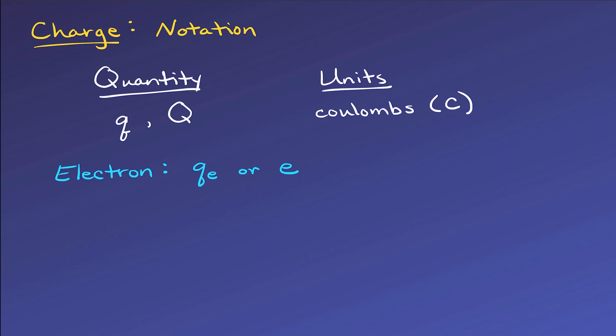Personally, I prefer to write Q sub e for the charge of an electron, and I'll use this going forward just to not get confused with the constant e that you see in math sometimes, though they are not often seen together. The charge of an electron is minus 1.602 times 10 to the minus 19 Coulombs, so a very small amount of charge.